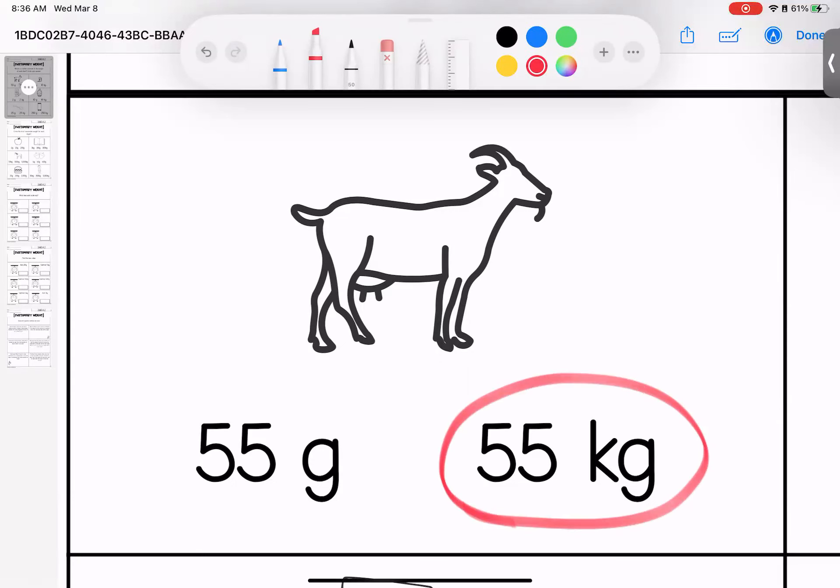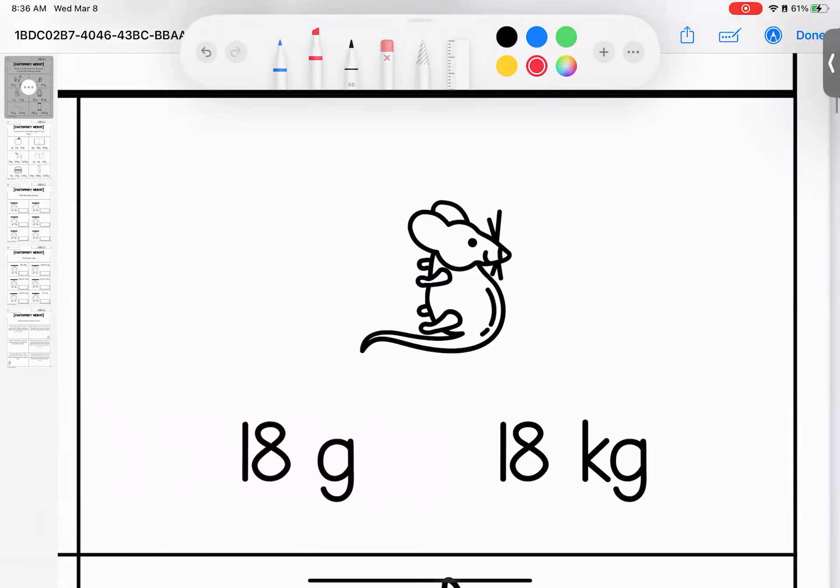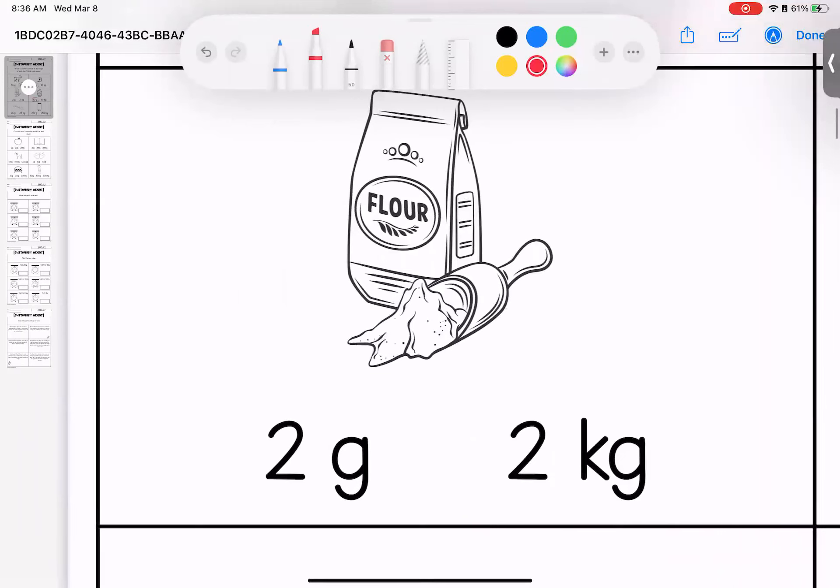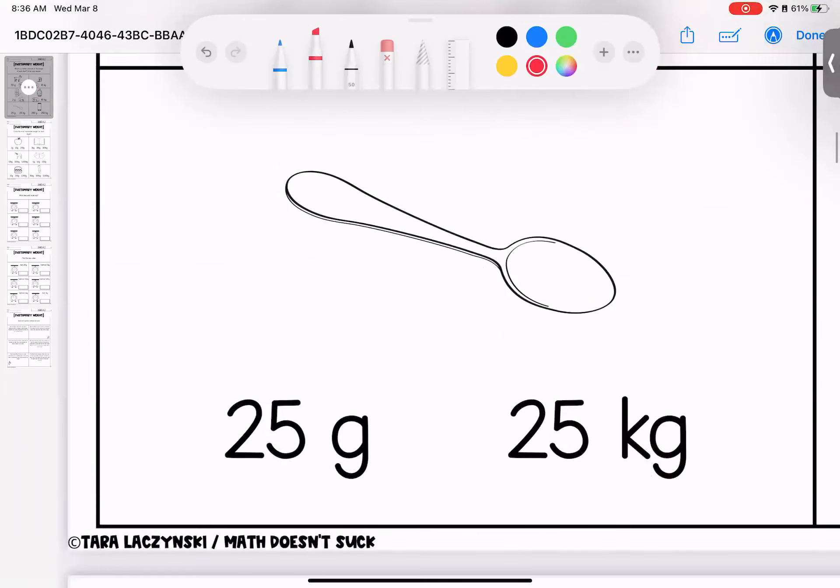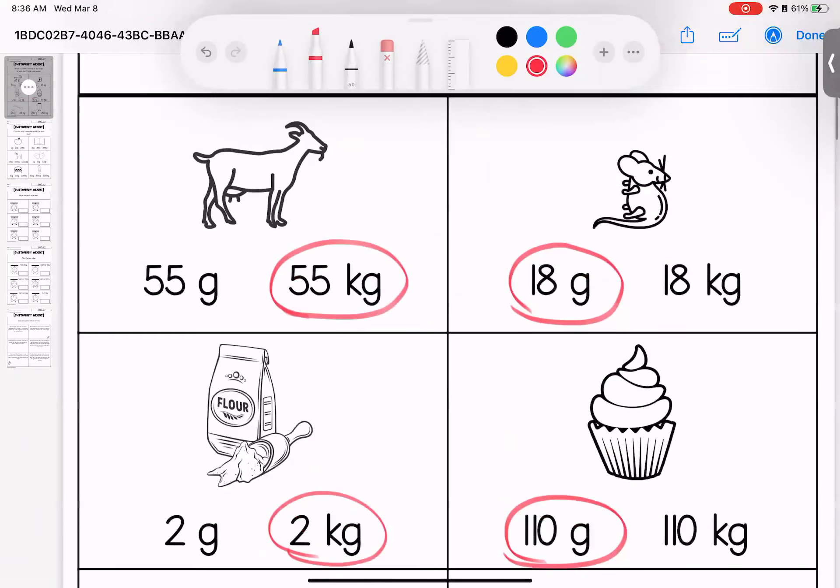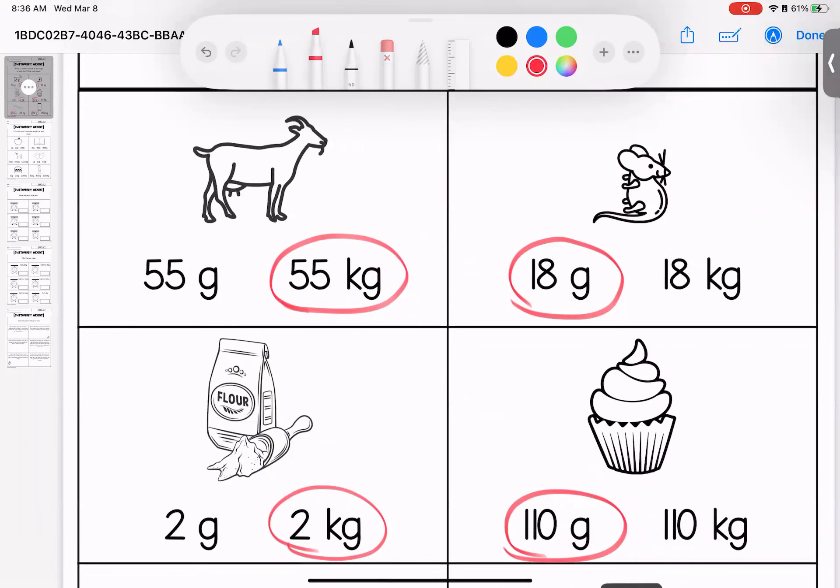55 paperclips would be way too small. We have a mouse. Would mouse be 18 paperclips or 18 pineapples? We're going to go with 18 grams or 18 paperclips. A cupcake, 110 paperclips or 110 pineapples? It's going to be grams. Flour is the same as 2 kilograms or 2 pineapples. A spoon would be the same as 25 grams or 25 paperclips. And a phone would be the same as 250 grams or 250 paperclips. Any questions about these? Bring them with you to class.